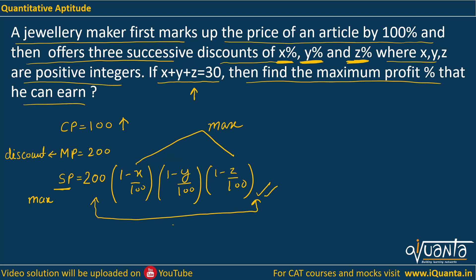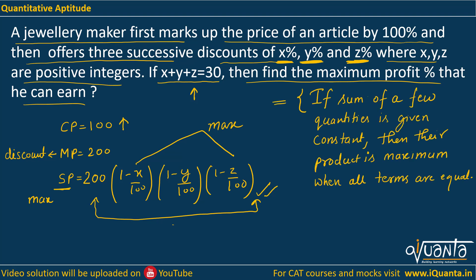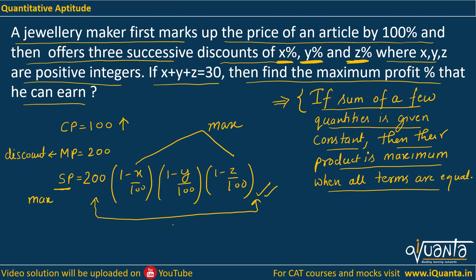There is a rule to remember: if the sum of a few quantities is given as constant, then their product is maximum when all the terms are equal. We have been given the sum of x, y, z equal to 30. So the product of x, y, z will be maximum when all the terms are equal, that means x equal to y equal to z.